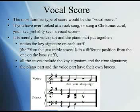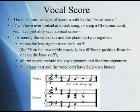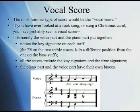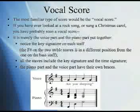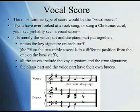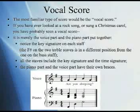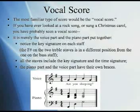Perhaps the most familiar type of score, even more familiar than the piano score, is the vocal score. If you've ever looked at a rock song or sung a Christmas carol, you've probably seen a vocal score. It is merely the voice part and the piano part put together. Notice the key signature on each staff. The F sharp on the two treble staves is in a different position from the one in the bass staff, because F sharp is in a different place on those two clefs. All the staves include the key signature and the time signature. The piano part and the voice part have their own braces.